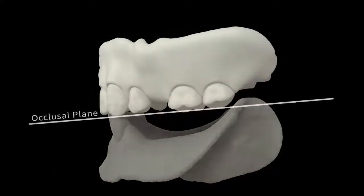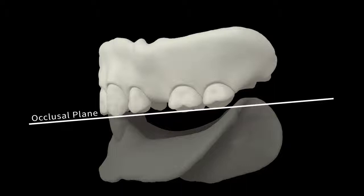The first premolars are positioned, along with the first and second molars, along the occlusal plane established on the mandibular arch.